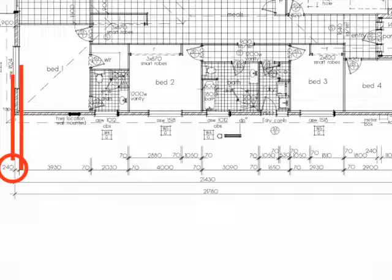These two lines indicate the thickness of the wall. It's an external wall, so the thickness is 240mm.